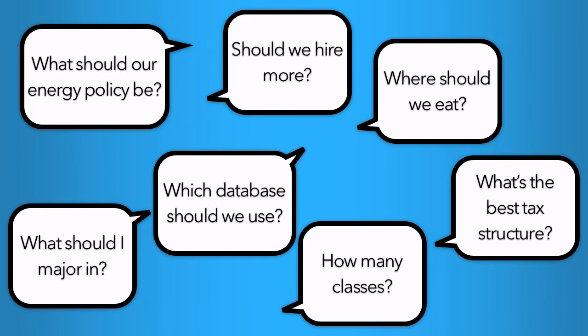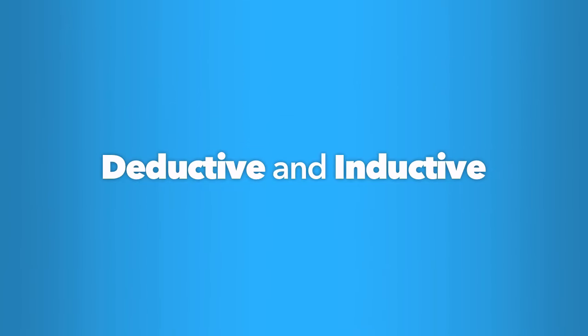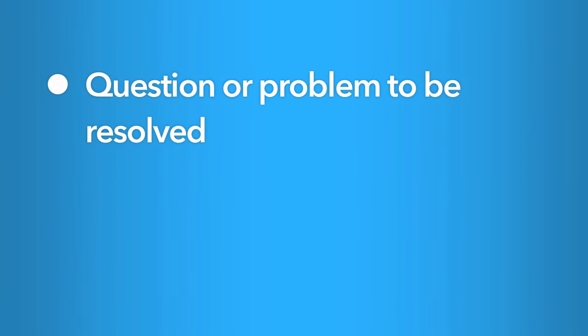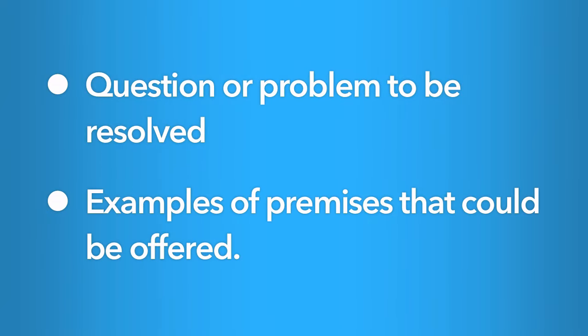We're going to dig deeper into two kinds of arguments: deductive arguments and inductive arguments. To get started, consider the following two examples. In each case, there's a question or problem to be resolved, and examples of possible premises that could be offered as part of an argument to address that question.